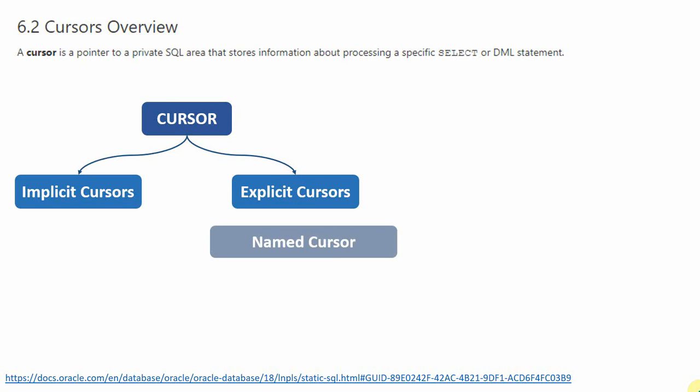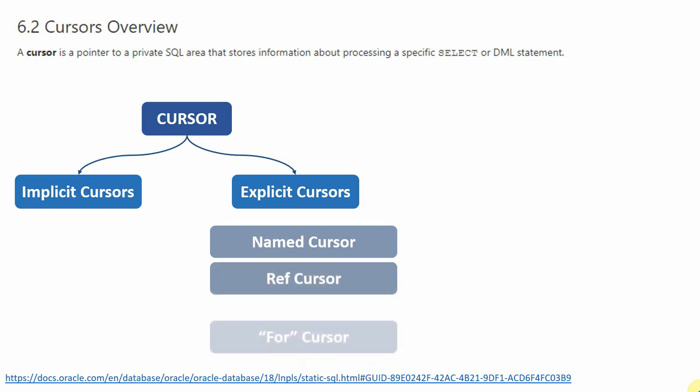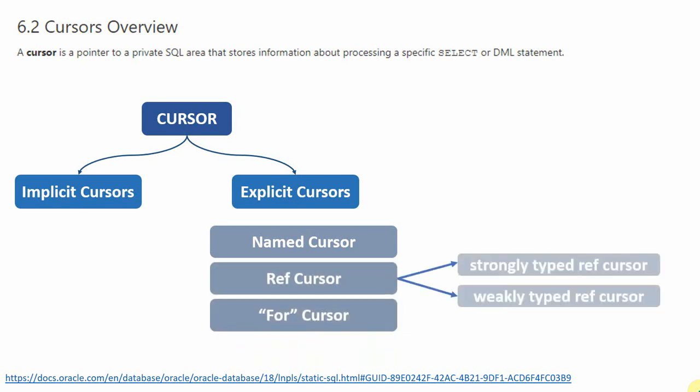An implicit cursor is managed by Oracle. So any SQL statement given to the Oracle engine — Oracle will open a memory location, execute it, and return the result set through the implicit cursor. Whereas the explicit cursor is fully managed by the developer. We have further subtypes under explicit cursor which we will see in subsequent videos.